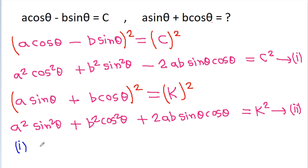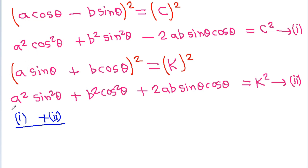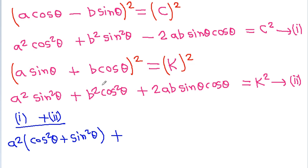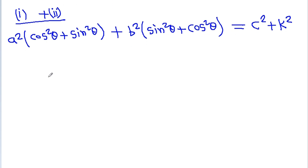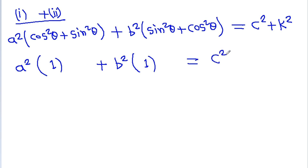If we add equation 1 and equation 2, then a squared cos squared theta plus a squared sin squared theta gives a squared times (cos squared theta plus sin squared theta), and b squared sin squared theta plus b squared cos squared theta gives b squared times (sin squared theta plus cos squared theta). The minus 2ab sin theta cos theta and plus 2ab sin theta cos theta cancel out. Since sin squared theta plus cos squared theta equals 1, the right-hand side is equal to c squared plus k squared.